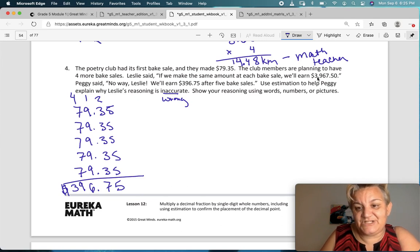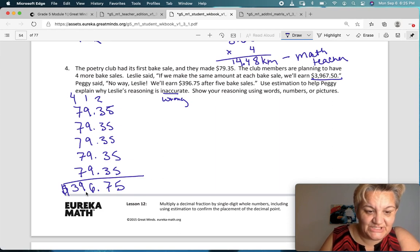So, there we did it, adding, just five times, adding, $396.75. So, when she said $3,967, what did she do? She accidentally put the decimal point here. She moved it over here, didn't she? So, that's what she did wrong. She had the decimal point in the wrong spot.